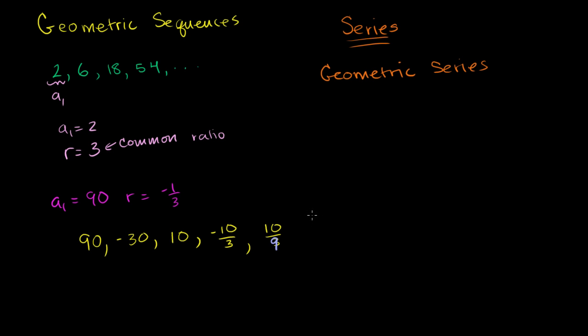So for example, this is a geometric sequence. A geometric series would be 90 plus negative 30 plus 10 plus negative 10 over 3 plus 10 over 9. So a general way to view it is that a series is the sum of a sequence. I just want to make that clear because that used to confuse me a lot when I first learned about these things. But anyway, let's go back to the notion of a geometric sequence and actually do a word problem that deals with one of these.